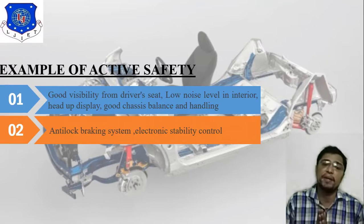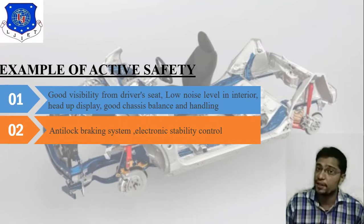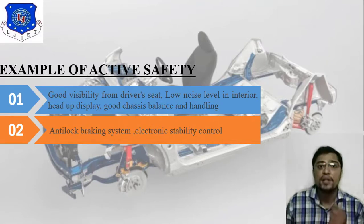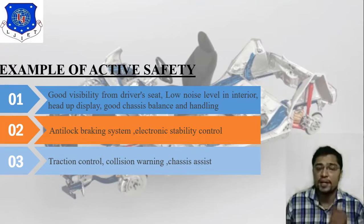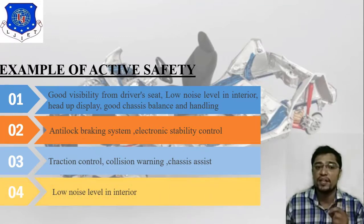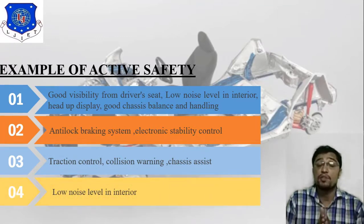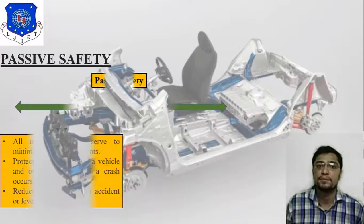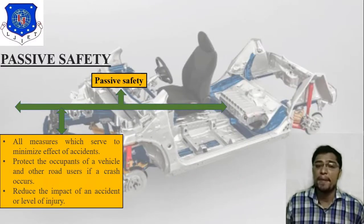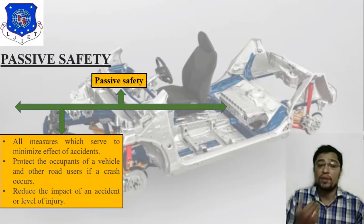Further examples of active safety: anti-lock braking system and electronic stability control, which are very important. Then traction control, collision warning, and chassis assist. These are all examples of active safety.